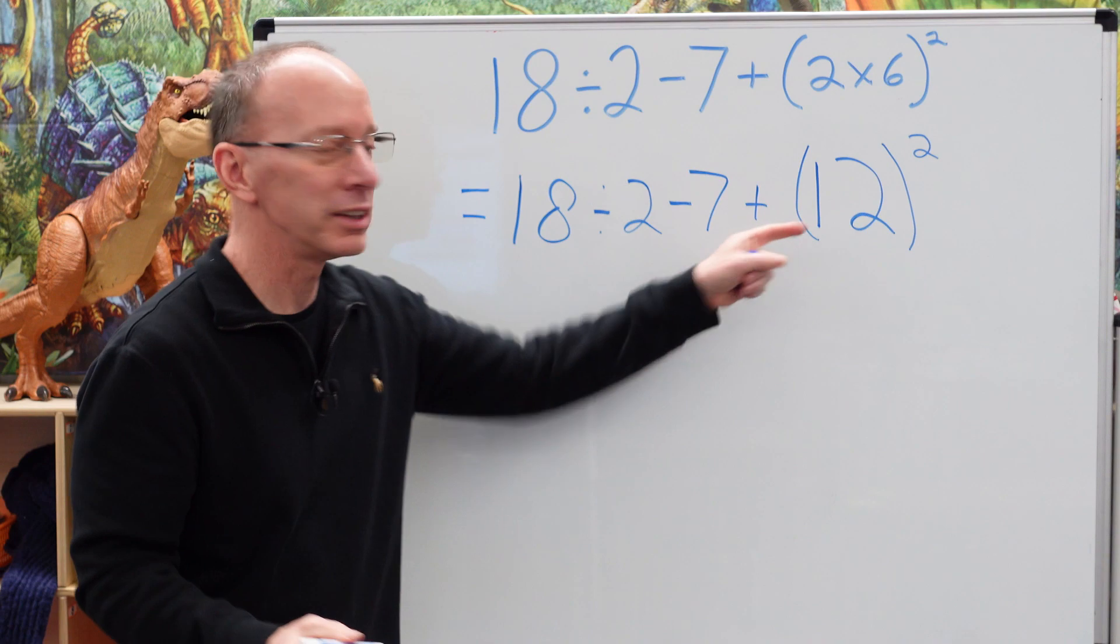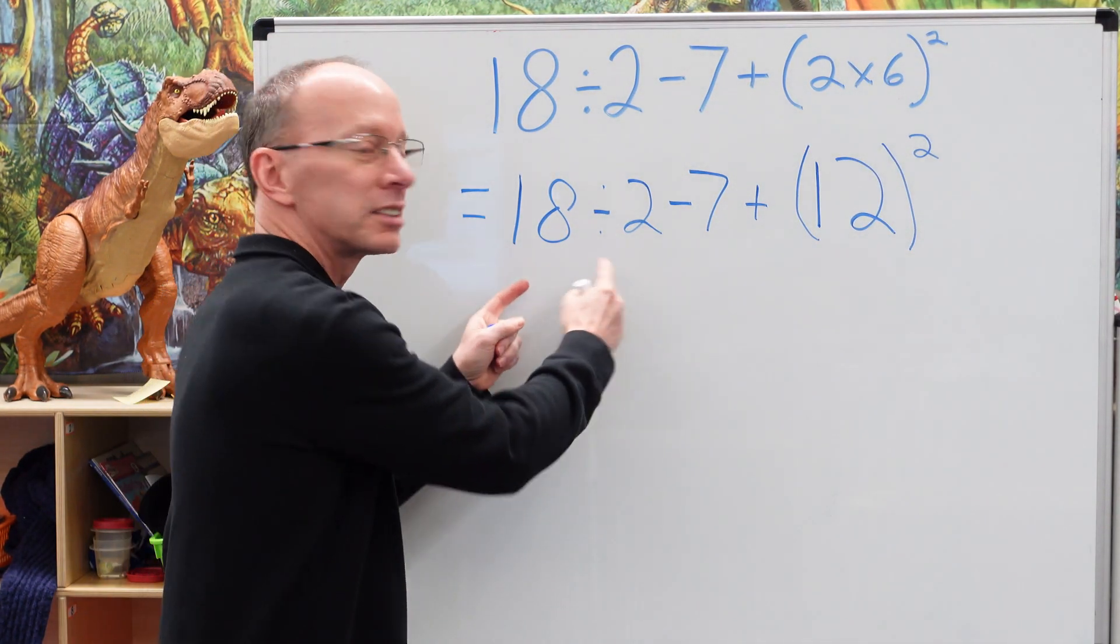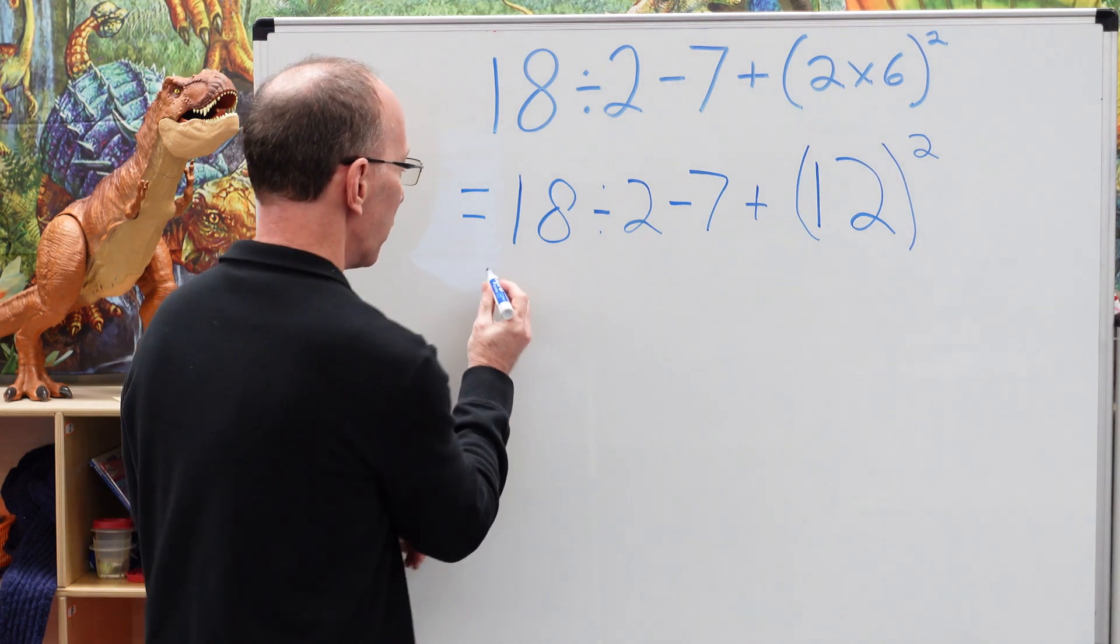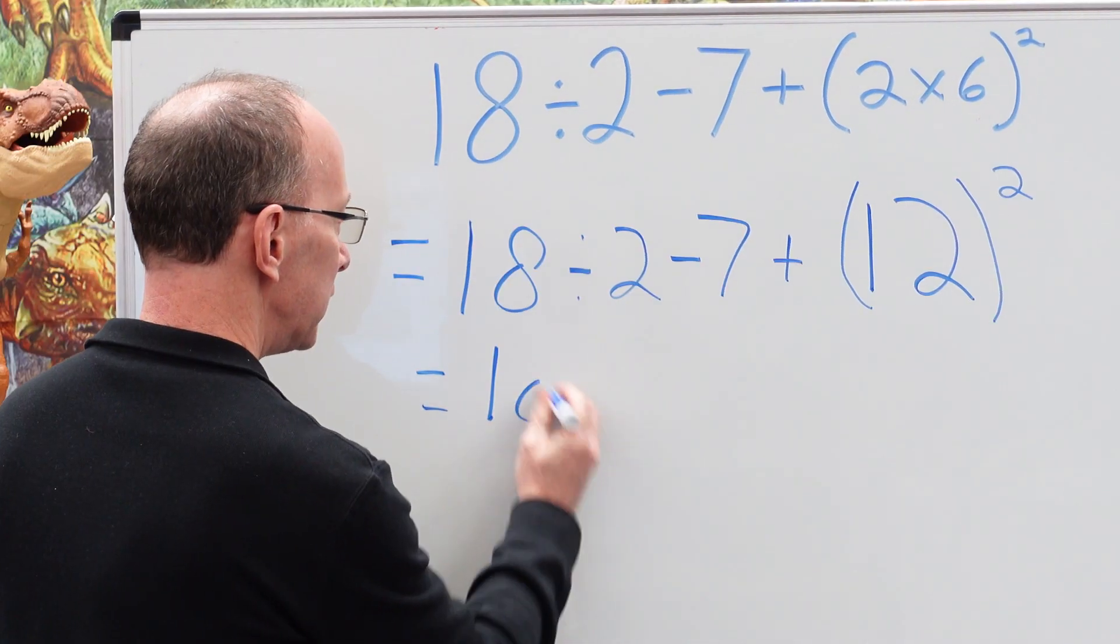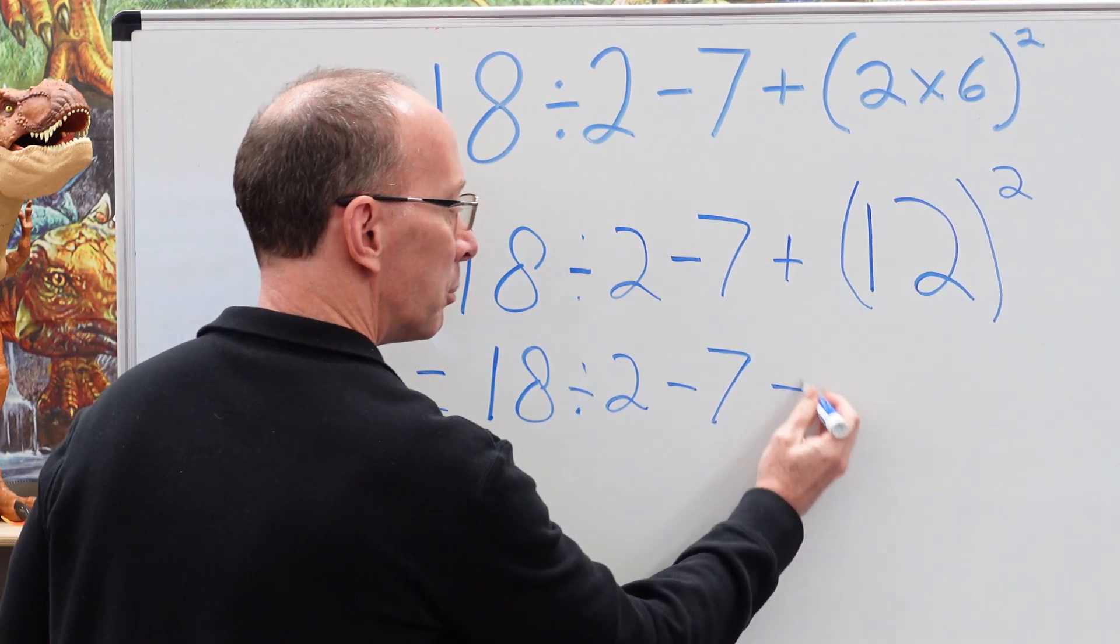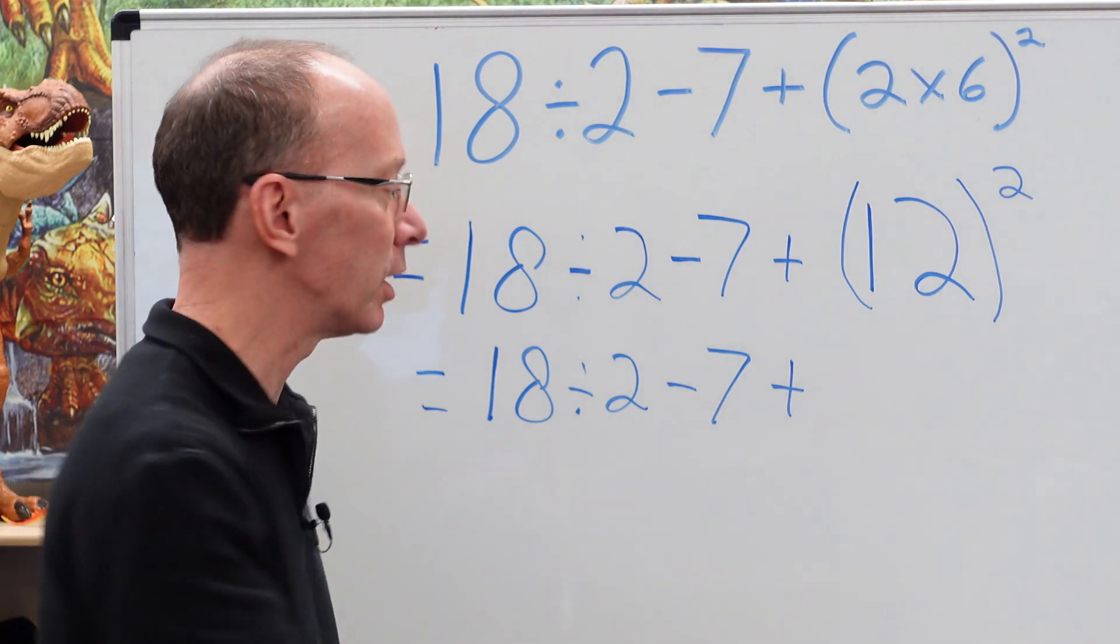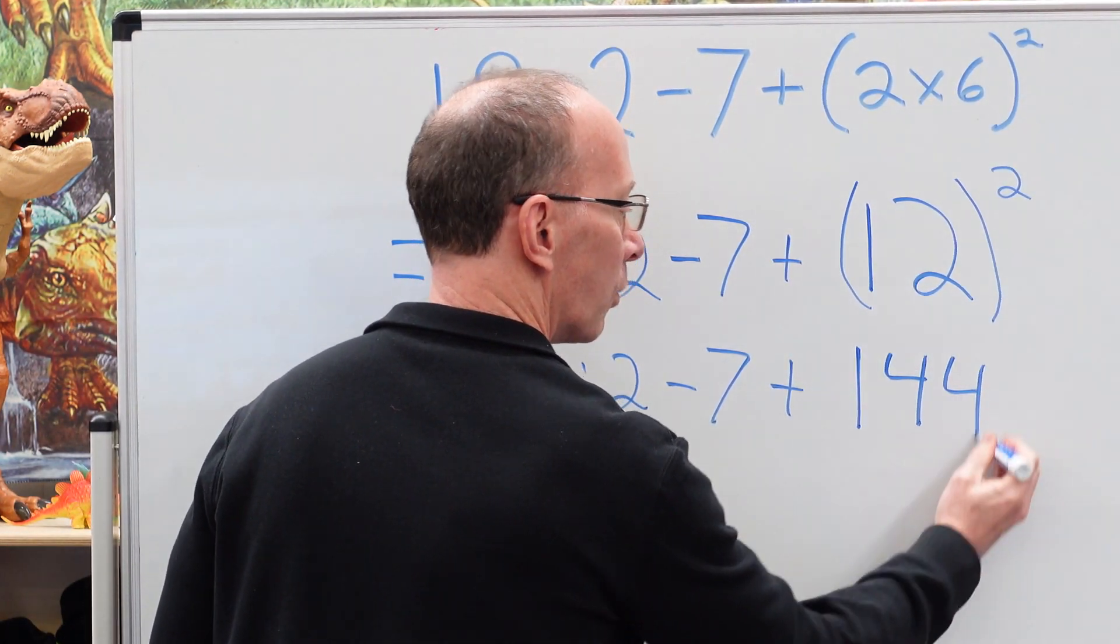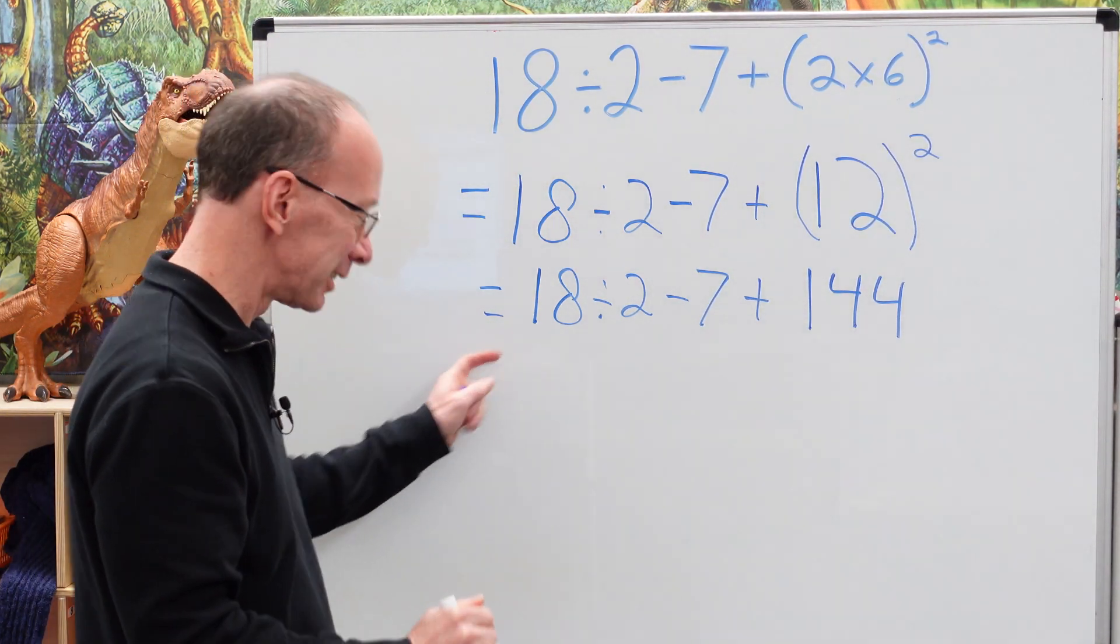So let's go ahead and do the problem here. Again, we're going to do the exponent. And when you start to do this and you get more practice, you'll be able to skip around a little bit. You'll be able to do 18 divided by 2. So I'm just going to keep it just simple for today. So we're going to do 18 divided by 2 minus 7 plus 12 times 12. That's the exponent. 12 to the second power is 12 times 12, which is 144. Make sure you practice that multiplication.